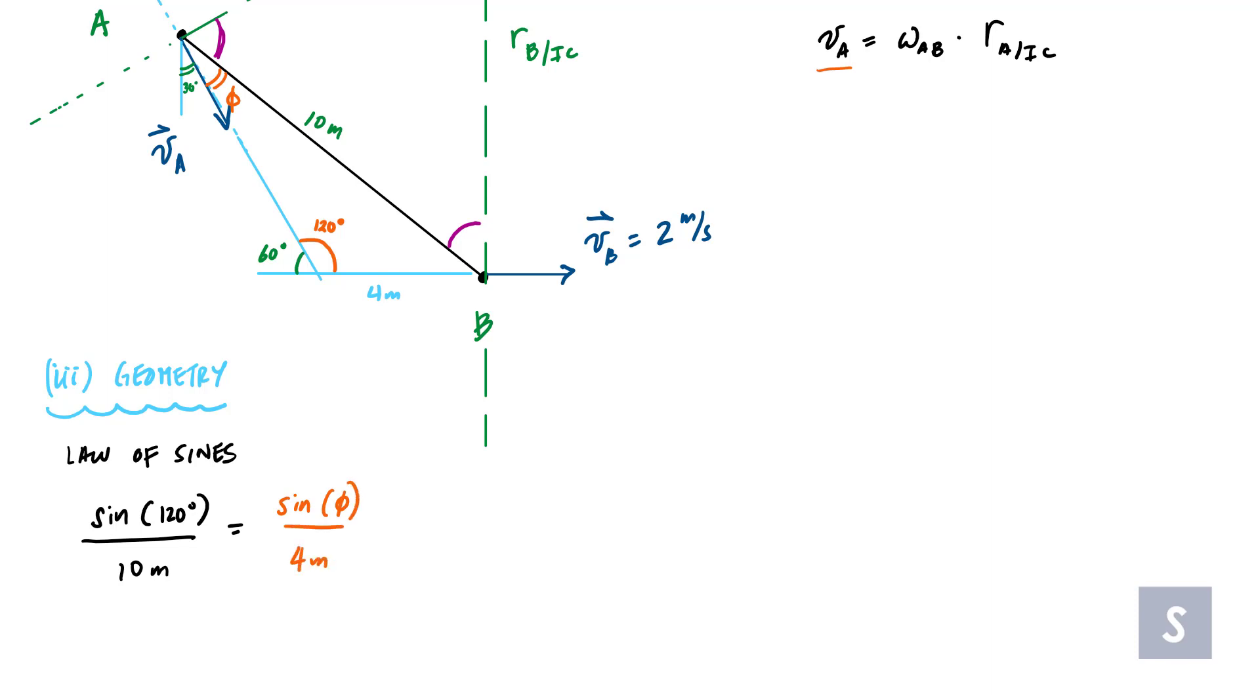And using this ratio, I can determine what phi is. And from here, this would tell me that phi is equal to 20.27 degrees. And that means this angle right here, which, why not call that angle gamma, that angle gamma, let's see, phi plus gamma plus 120 should equal 180 degrees. And so gamma is 39.73 degrees.